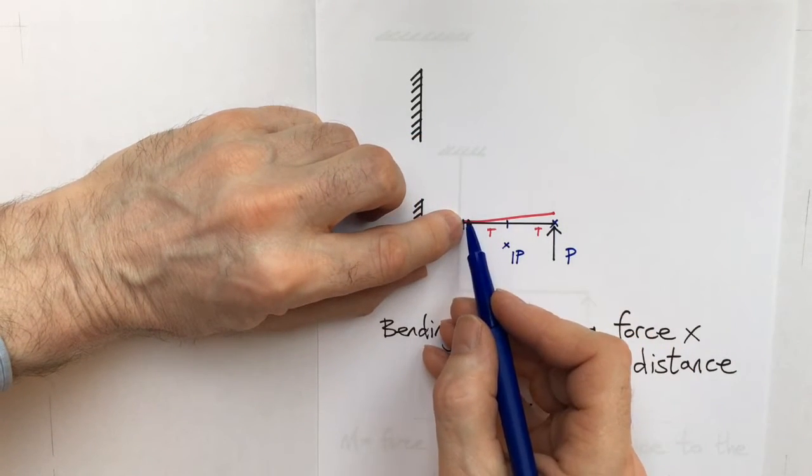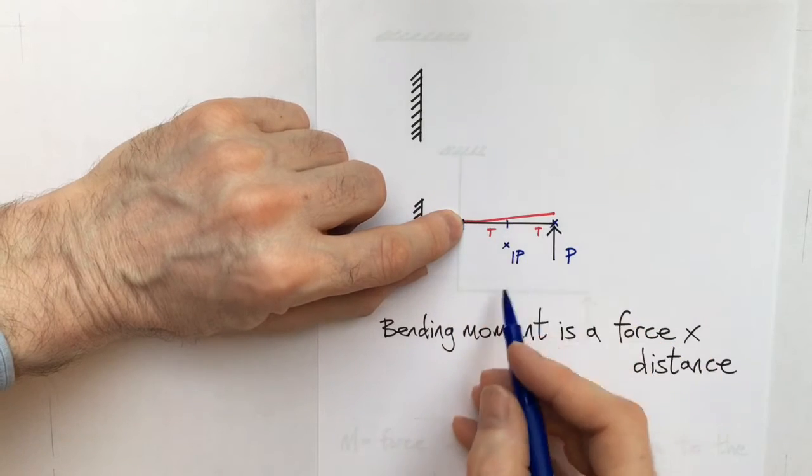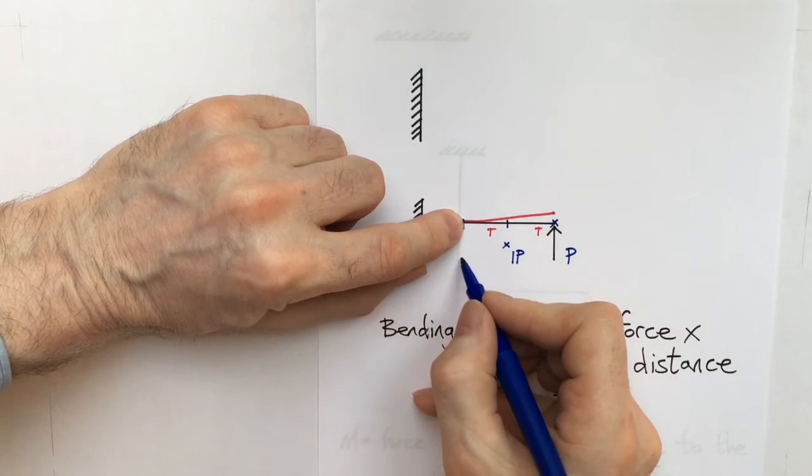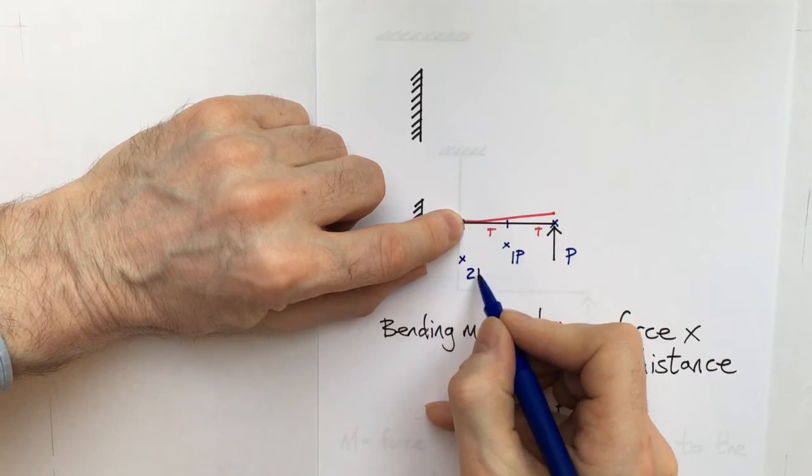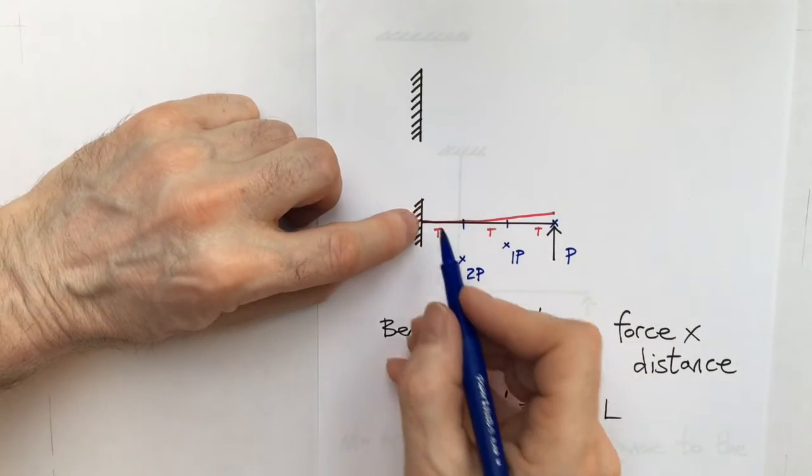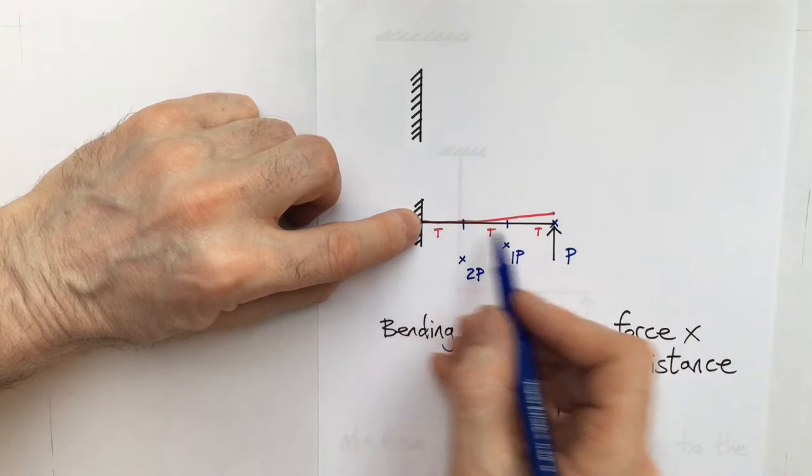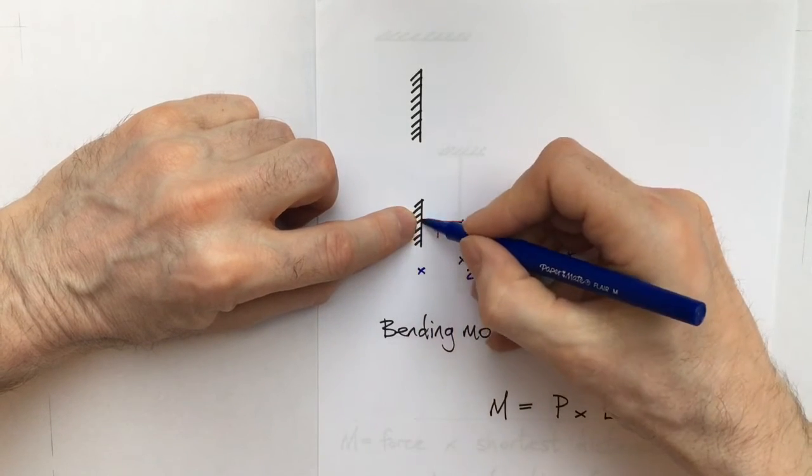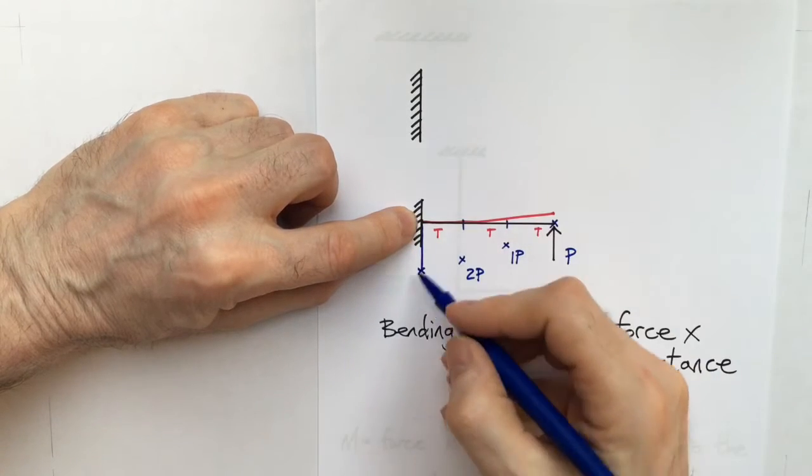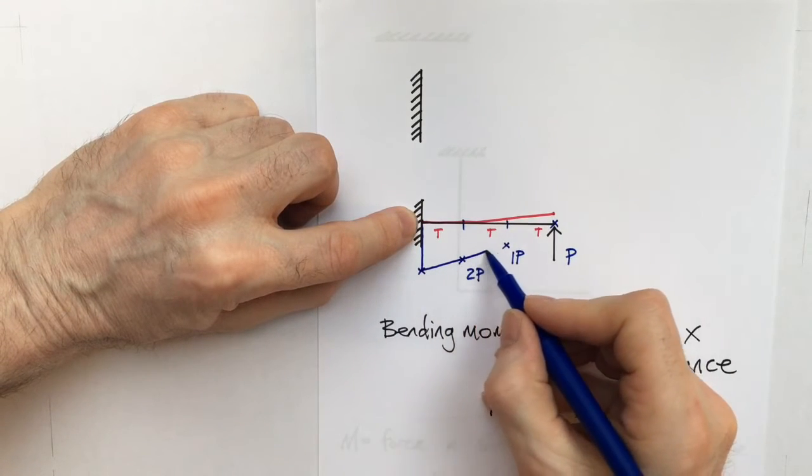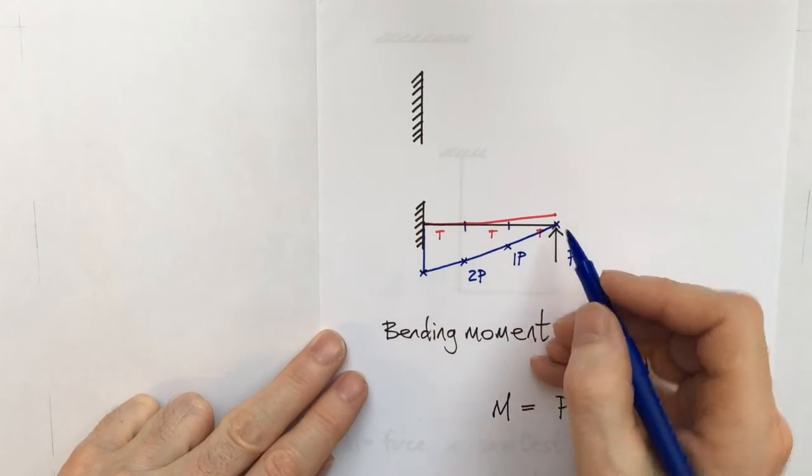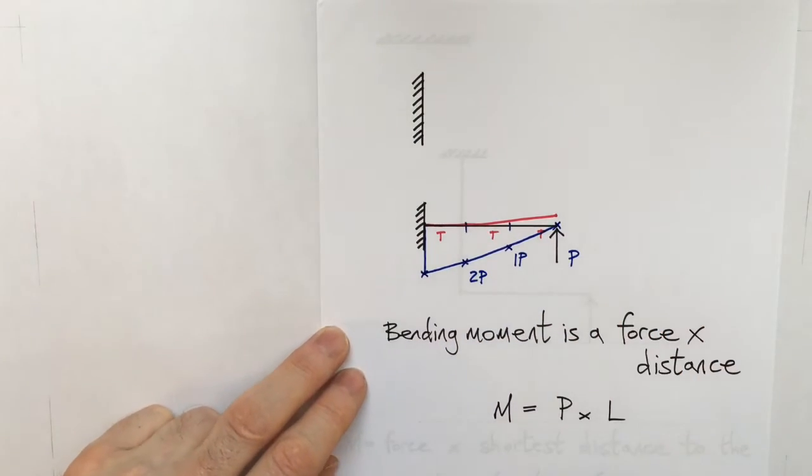If I now go two meters away, the distance is two. Therefore the bending moment is going to be P times two. So it's going to be two P. Then we get right down to the end. It's going to be three times P. So it's going to be three P. You might be able to tell if I join the dots here that this is the shape of the bending moment diagram and it's simply a triangle. It's as simple as that.